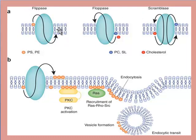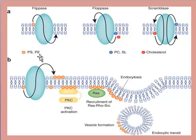Flip is from the upper side to the lower side, and flop is from the lower to the upper side. Scramblases maintain both directions of movement of phospholipid proteins. The phospholipids transported here are phosphatidylserine and phosphatidylethanolamine — have you heard about them?